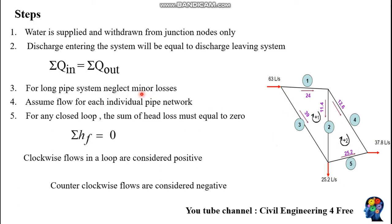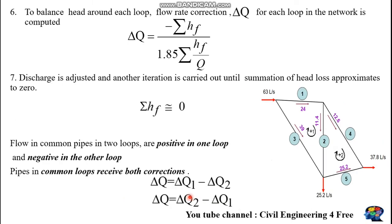For any closed loop, the sum of head loss due to friction must also be zero. Regarding flow direction, clockwise flows are assumed to be positive and counterclockwise flows are considered negative. Using the Hardy Cross method, you first have to determine the discharge correction. The discharge correction is given by the ratio of the summation of head loss due to friction to 1.85 times the summation of the ratio of head loss due to friction to discharge.